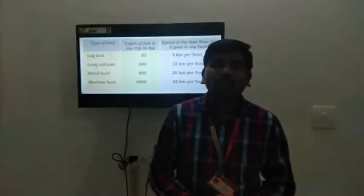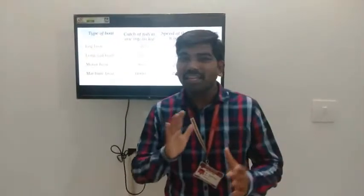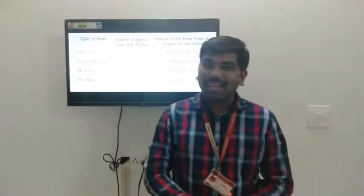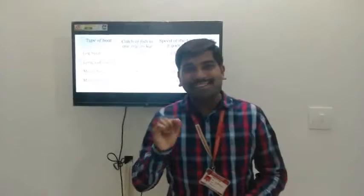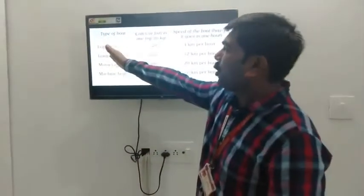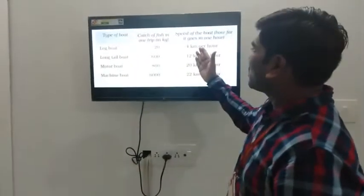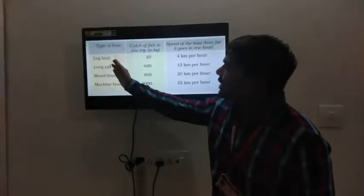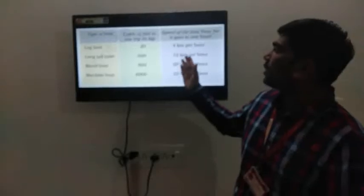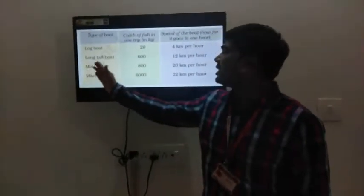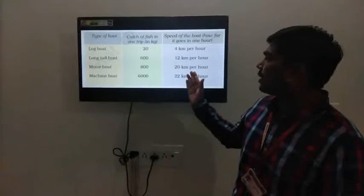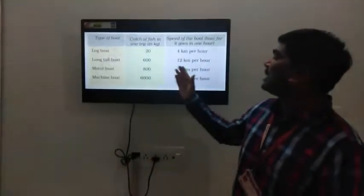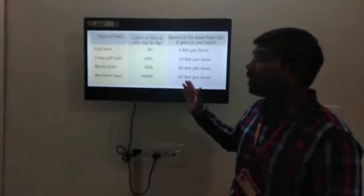This table also shows the speed of each boat, means the distance traveled by them in one hour. Log boat travels 4 km per hour. Speed of long tail boat is 12 km per hour. Motor boat speed is 20 km per hour. And last is our machine boat, its speed is about 22 km per hour.